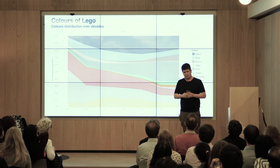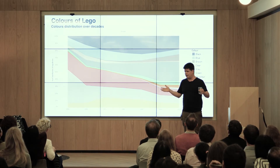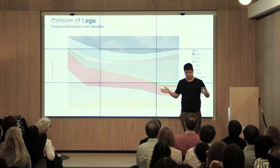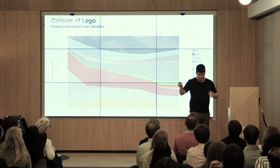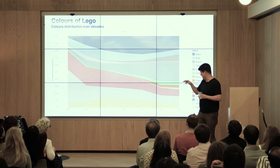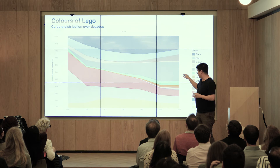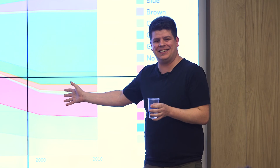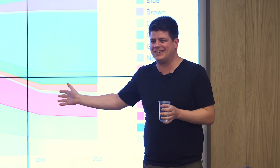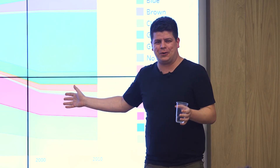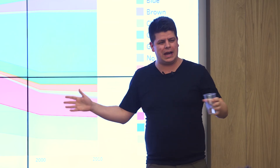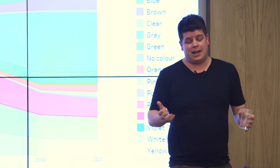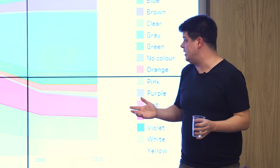I was quite sad, thinking of children seeing all this gray and not so much color anymore. But then I just clicked on the detail and realized: Star Wars. In 1999, Lego started marketing the Star Wars story, which was all gray and lots of parts. So that was the main reason.